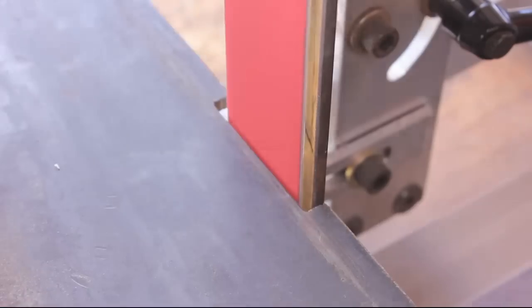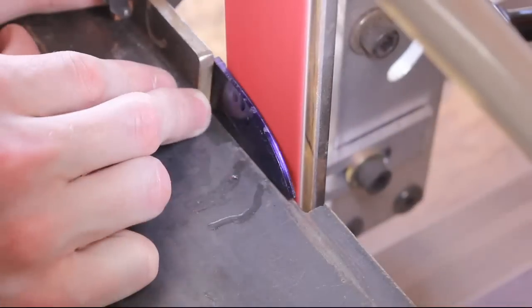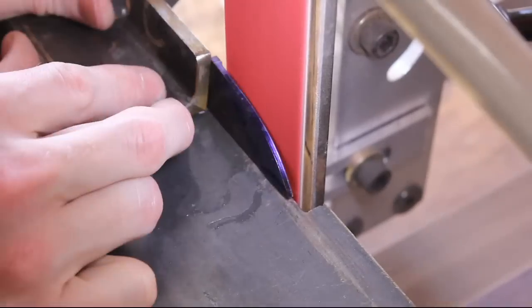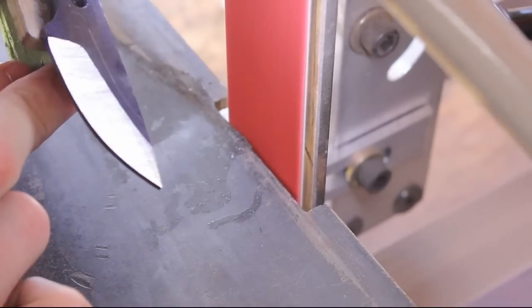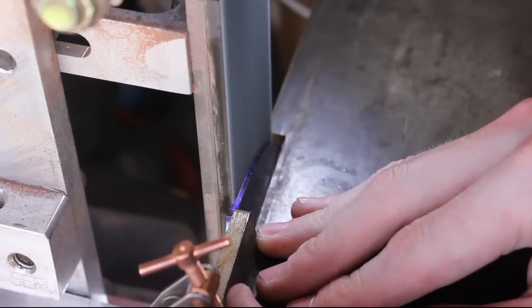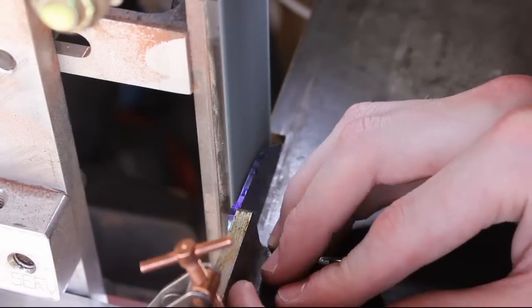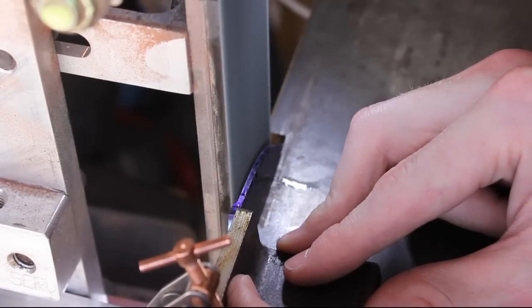Chalk it up in the bevel jig and then got started with a 60 grit belt. I'm actively adjusting the angle of the jig in order to grind closer and closer to my scribe lines up the bevel of the blade.